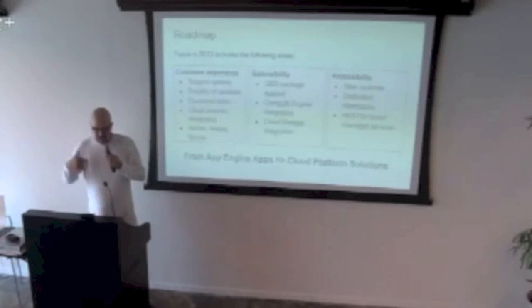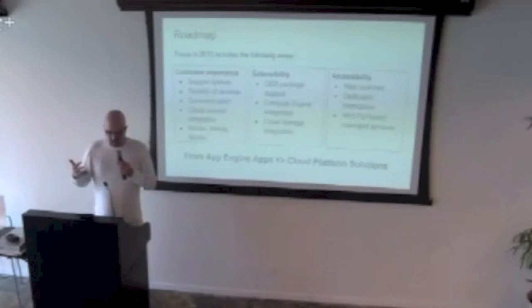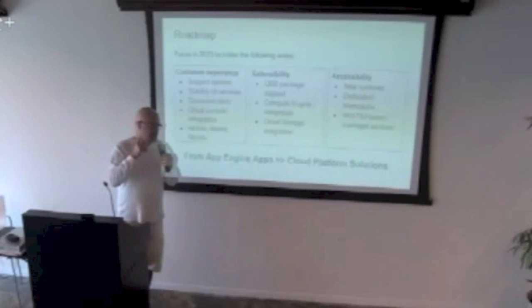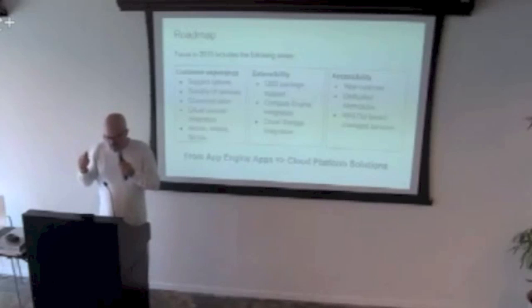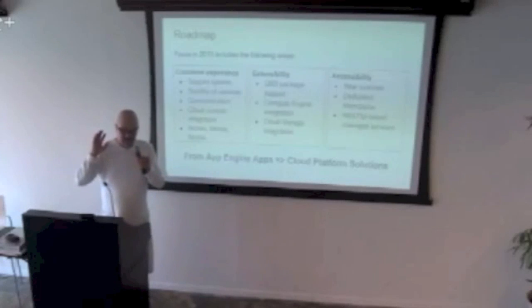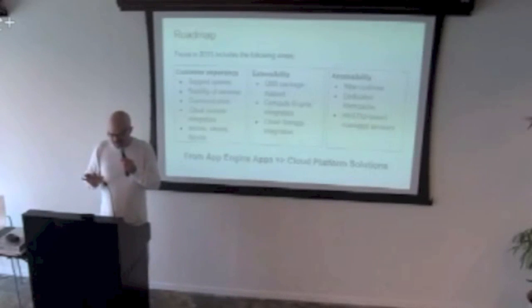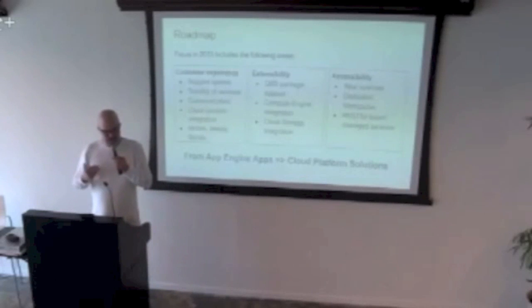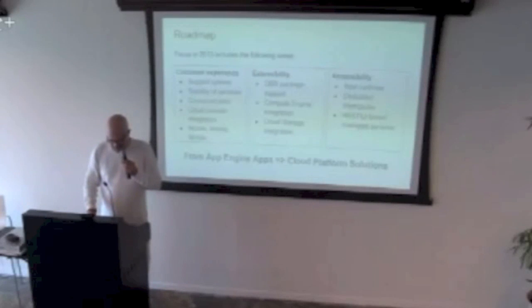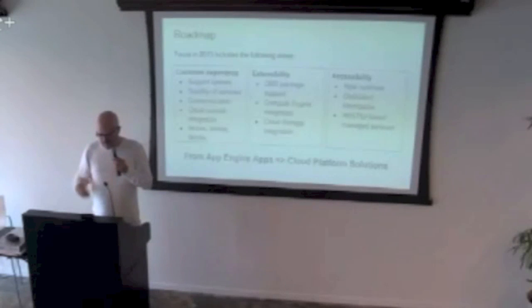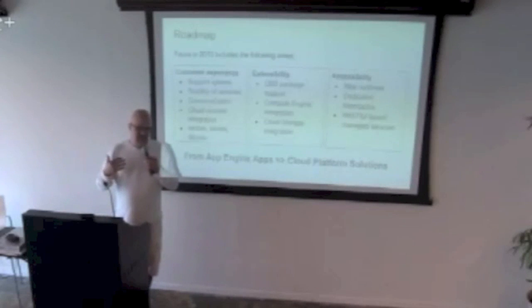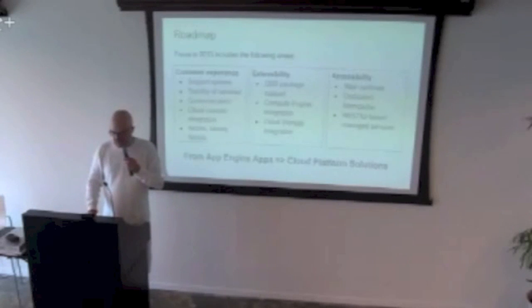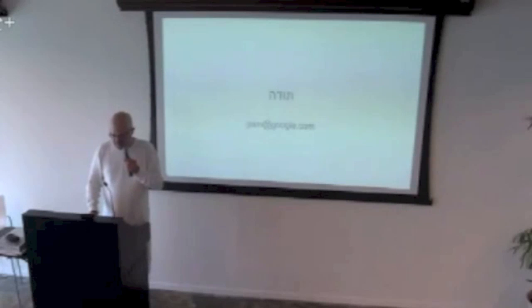The general themes for App Engine in 2013 are moving from applications to solutions, improving customer experience, and adding extensibility and accessibility. We now have tiered support — gold support is $400 per month and up. If you're doing anything important on App Engine or Cloud, please go gold or higher. A lot of what we're doing now addresses the limitations and challenges developers have encountered over the last several years with App Engine, and fundamentally moves the goalposts on developer experience.